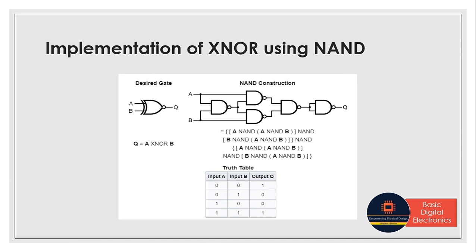Next, we will see how to construct an XNOR gate using NAND gate. XNOR is an inverted version of XOR, meaning XOR followed by a NOT gives us the XNOR gate. So here we have the four NAND gates for the XOR gate, followed by a NOT, which gives us the XNOR gate. The functionality of XNOR gate is implemented using NAND gates.